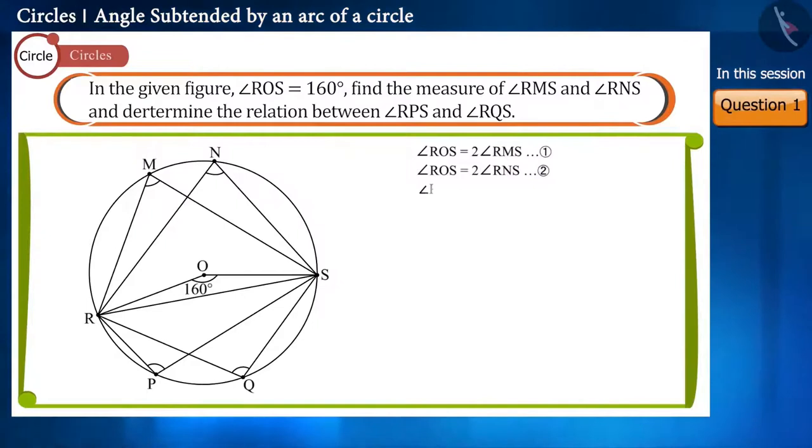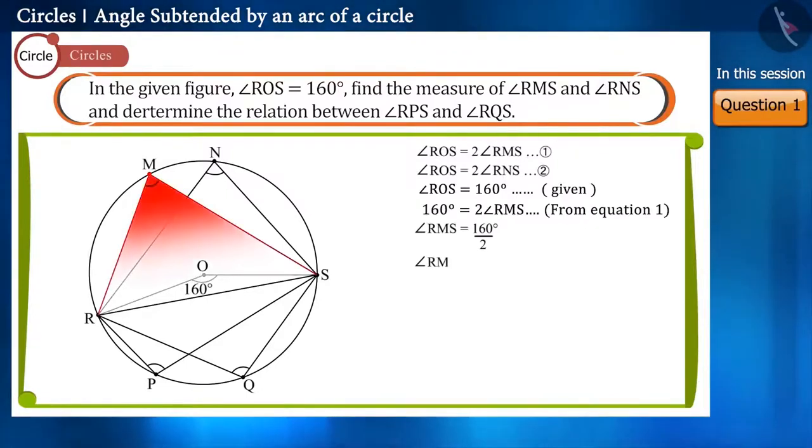In this question, the value of angle ROS is given. In equation 1, we substitute its value and solve it in this way. We will get the value of angle RMS equal to 80 degrees.